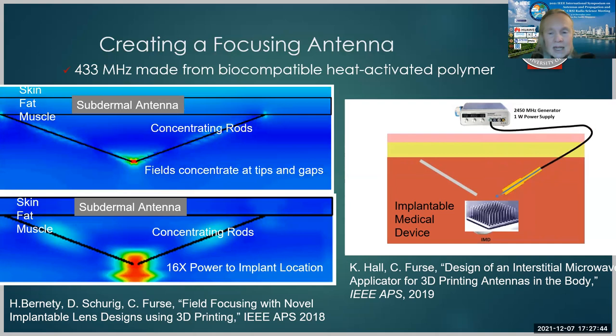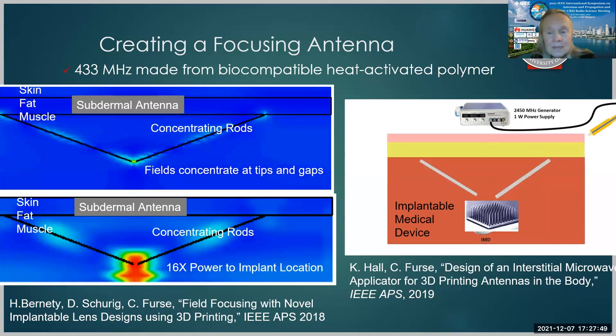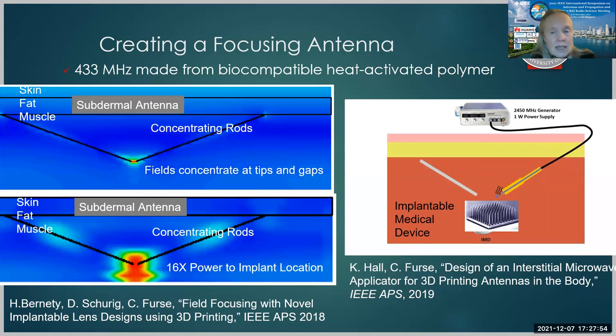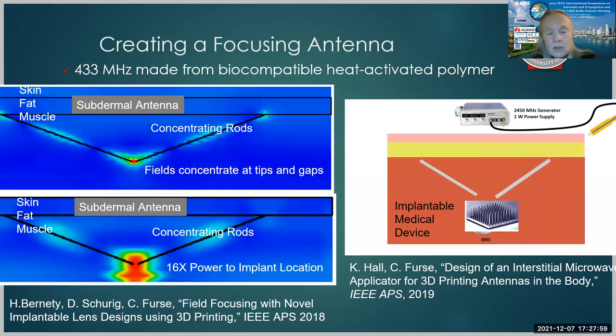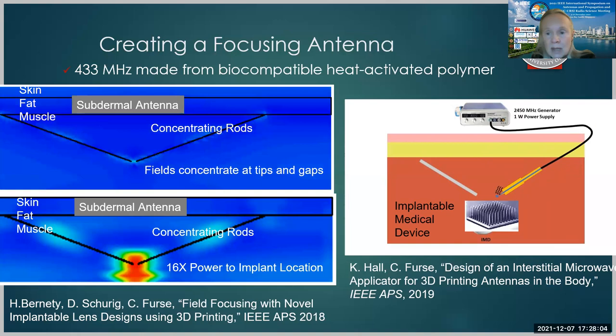As shown here on the right, inject the polymer, heat it back out, and basically extrude a wire of this type. So the possibility of producing concentrating rods using heat activated polymers is very realistic, and that is able to concentrate the power at the very small implant to the tune of about 16 times as much power as you could have without the rods.